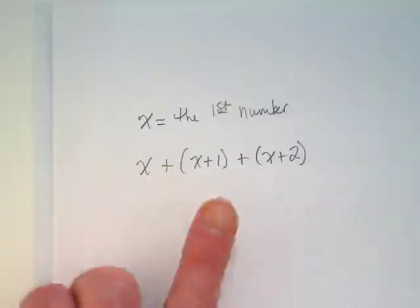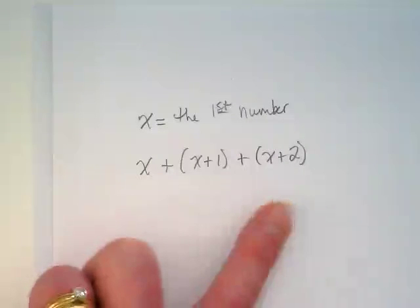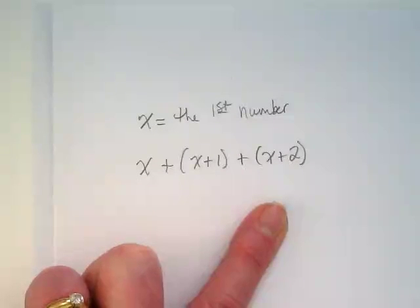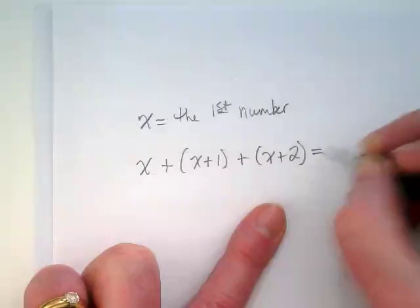First number, second number, third number. What does it equal? 132.